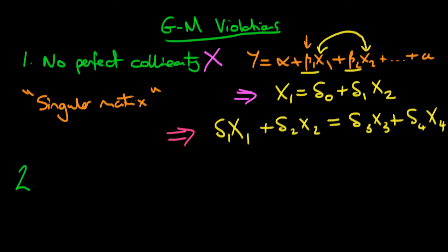Okay, so that's the problem if we have a violation of the assumption of no perfect collinearity. Now we're going to talk about if we have a violation of the homoscedastic errors. We've spoken about a number of tests for this particular Gauss-Markov condition. We've spoken about the Breusch-Pagan test.